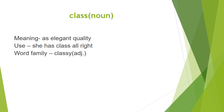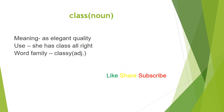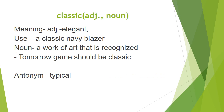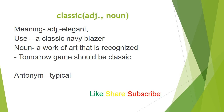Class: noun, meaning an elegant quality — she has class. Word family: classy adjective. Classic: adjective and noun. As an adjective: elegant — a classic navy blazer. As a noun: a work of art that is recognized as great — tomorrow's game should be a classic. Antonym: typical.